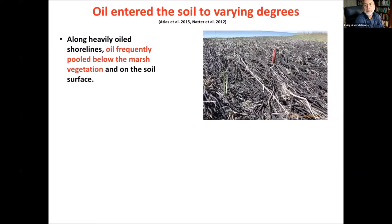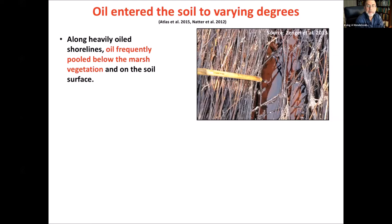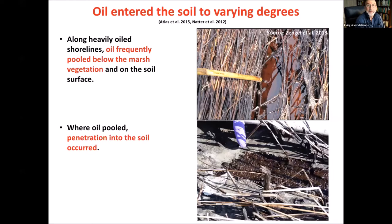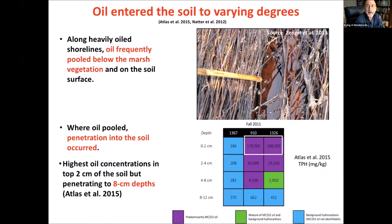Oil impact on vegetation can also be a function of whether the oil penetrated the soil. Along heavily oiled shorelines, oil often pooled below the marsh vegetation and penetrated the soil, especially during times of warm temperatures. Although the highest oil concentrations were in the top two centimeters of the soil surface, as shown by Atlas et al., Macondo oil also penetrated as far as eight centimeters into the soil, and data suggest it may have gone even further at heavily oiled sites.